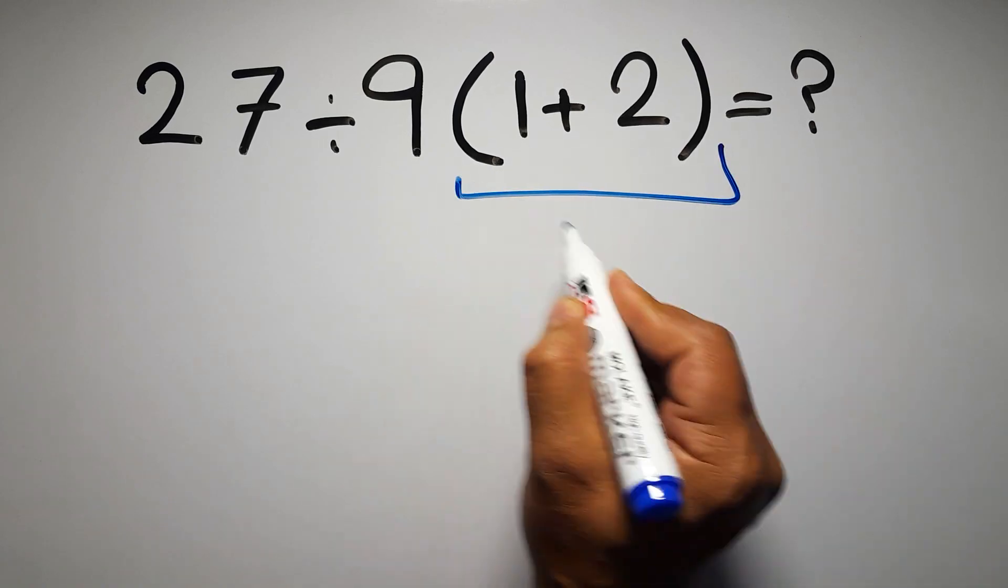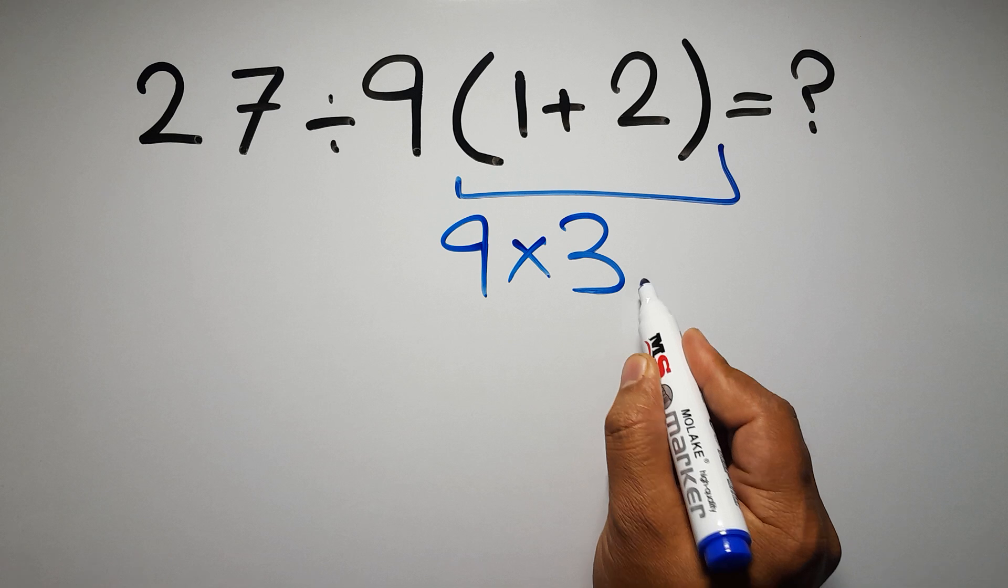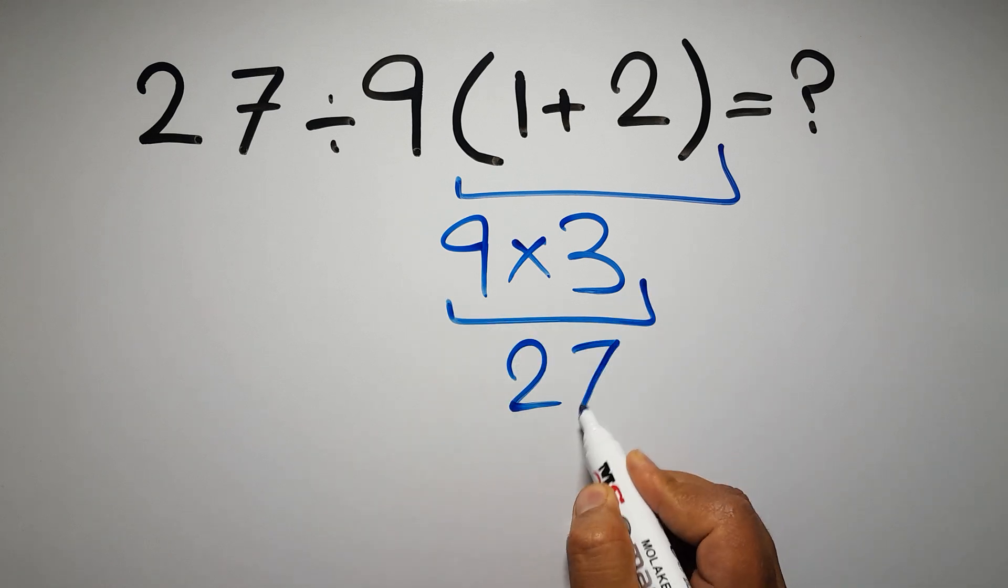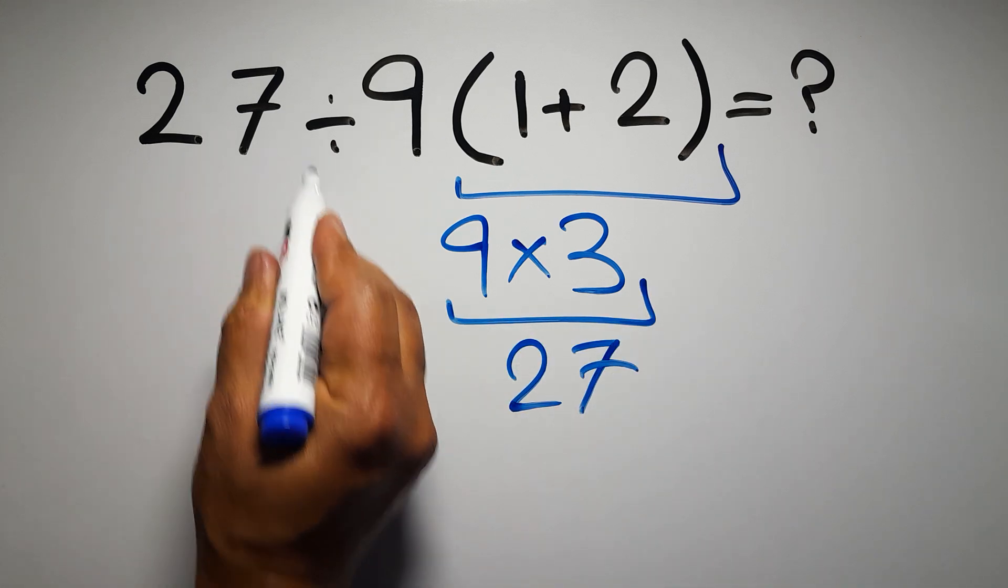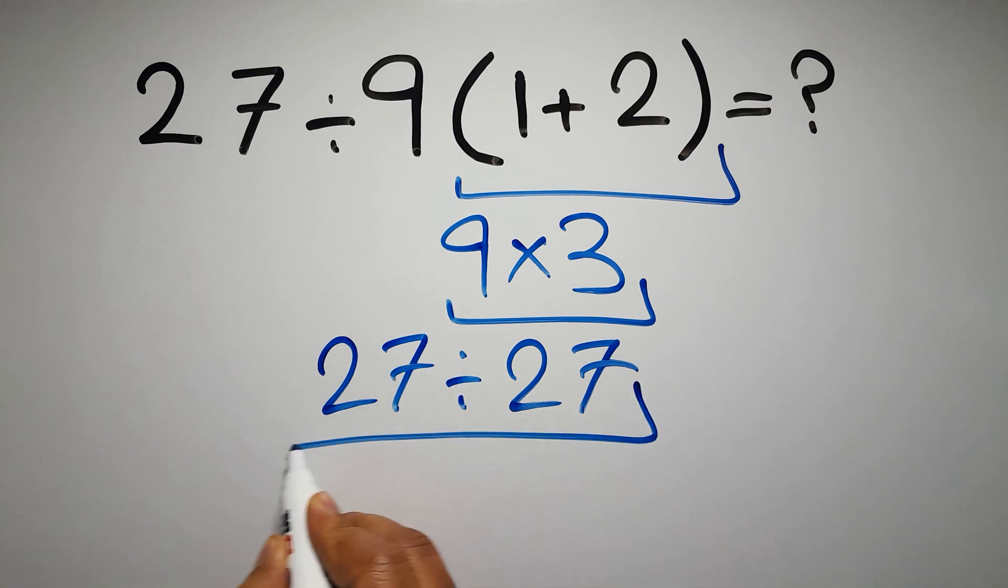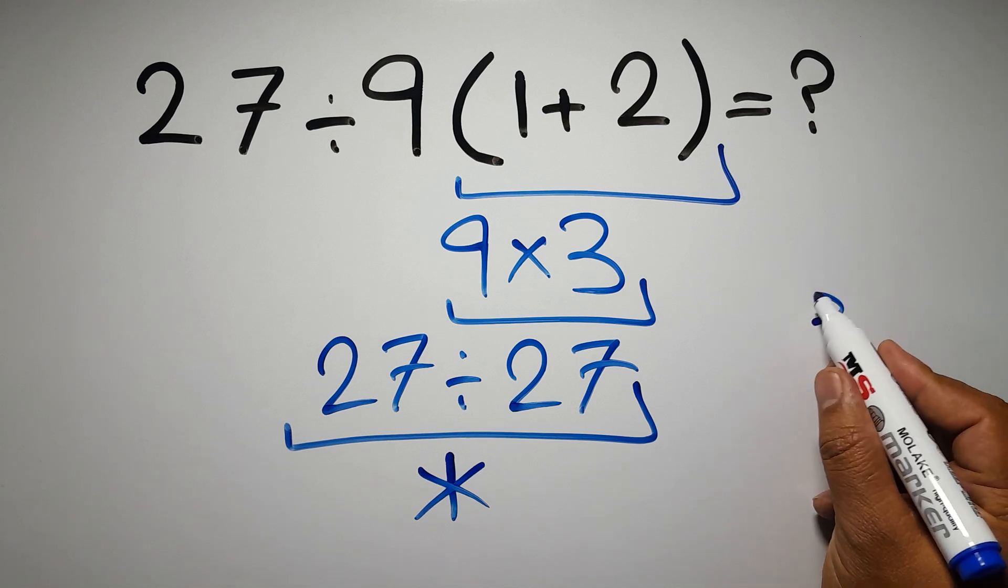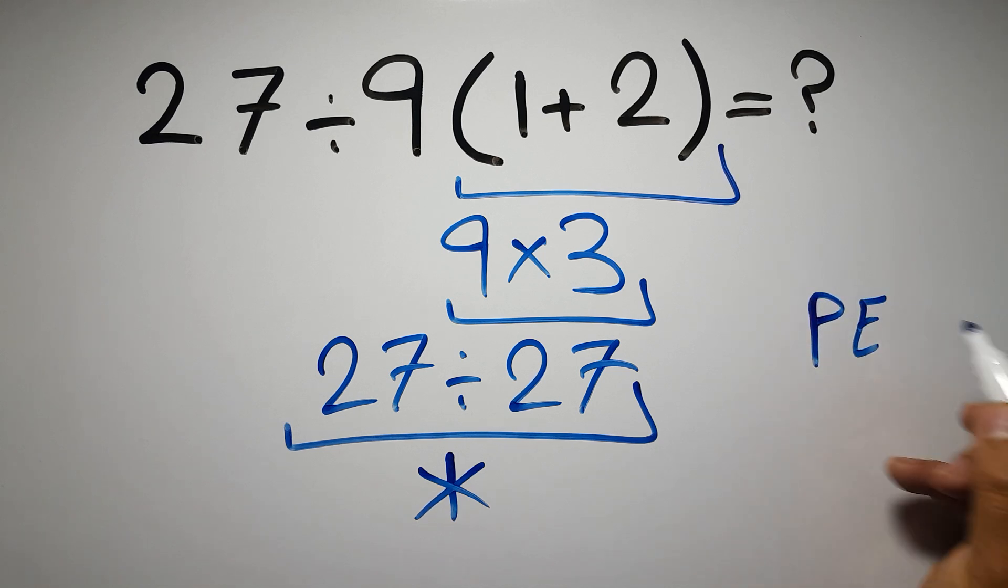1 plus 2 gives us 3, 9 times 3 equals 27, so 27 divided by 27 gives us 1. But this answer is not correct because according to the order of operations, first we have to do parentheses, then exponents.